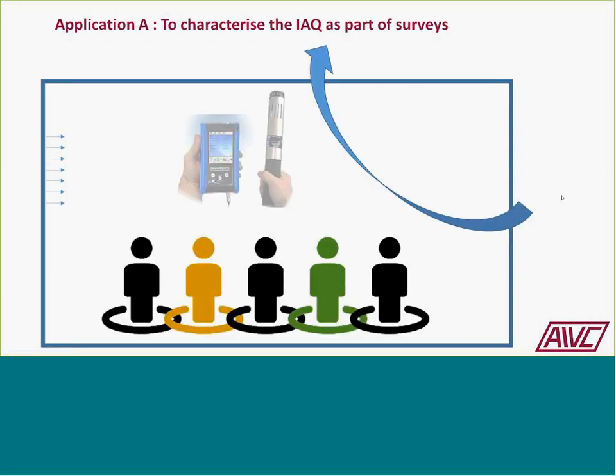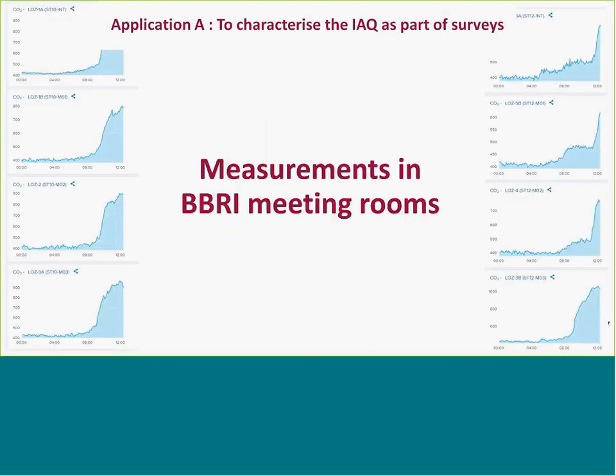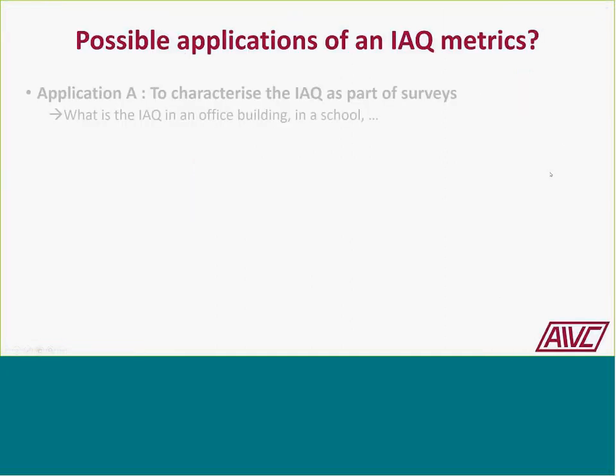In simplified terms, you want to measure a number of variables accurately and report IAQ measurements accurately. Systems provide various variables as a function of time, which can be translated into maximum values, average values, and so on. This is the first type of application: characterizing indoor air quality as part of surveys.